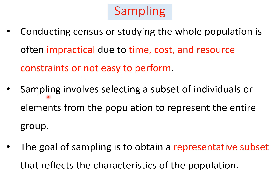Sampling involves only a subset of individuals or elements from the population, but they represent the entire group that the sample is drawn from. The goal of sampling is to obtain a representative subset that reflects the characteristics of the population. Even though they are a subset, they represent and reflect the population's characteristics.